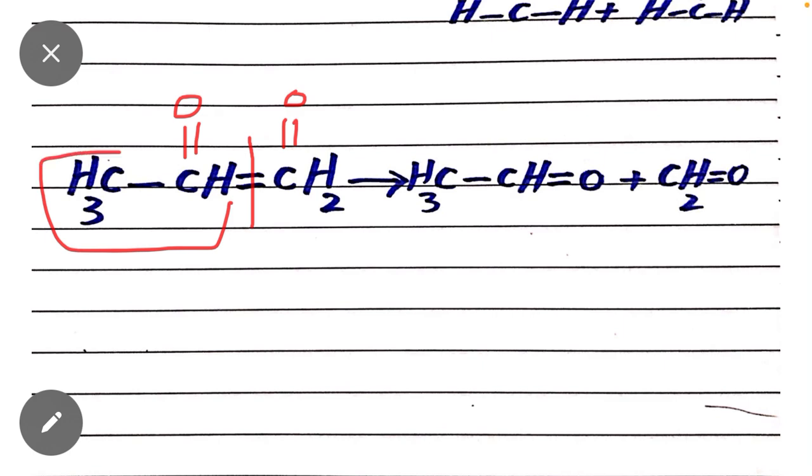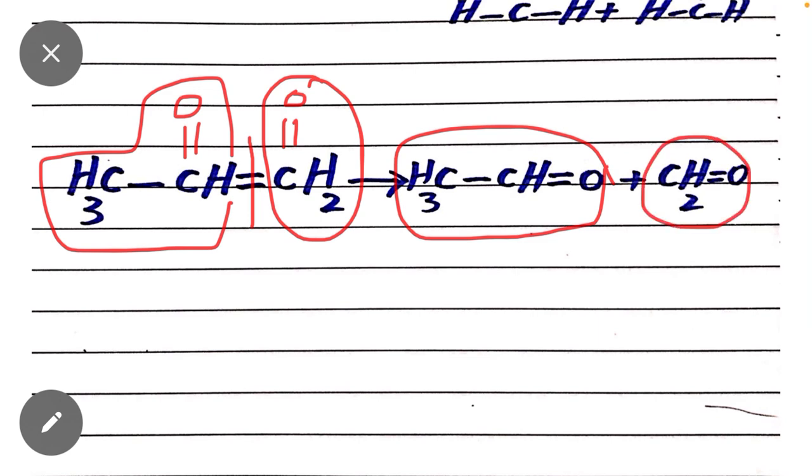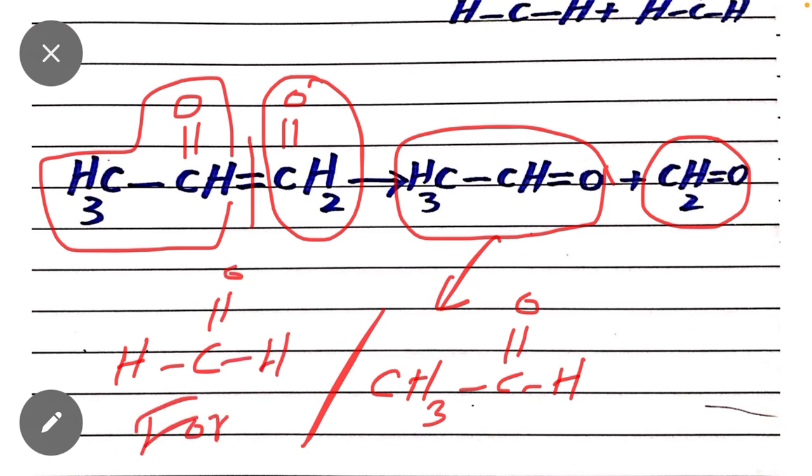One product is acetaldehyde and the other product is formaldehyde. Acetaldehyde can also be written as CH3-C=O-H, and formaldehyde can also be written as HC=O-H. This is the formaldehyde and this is the acetaldehyde.